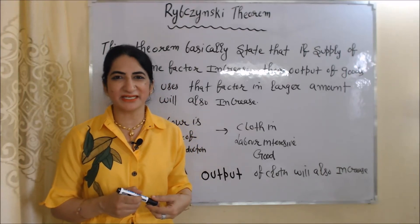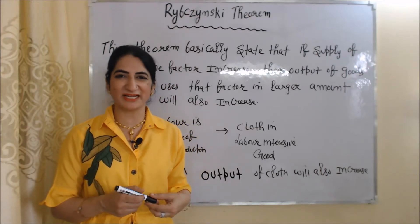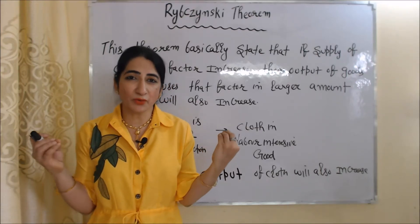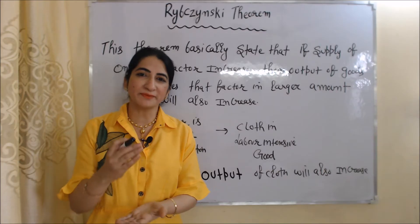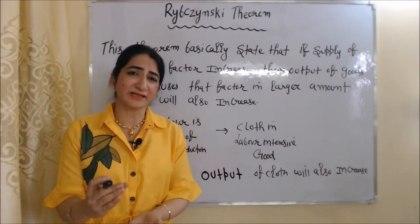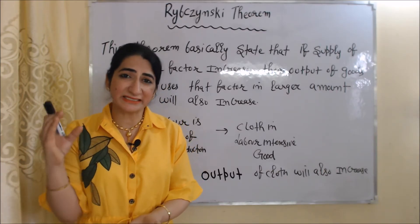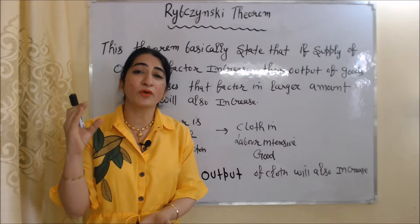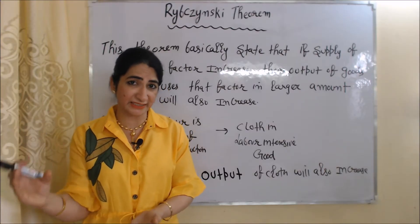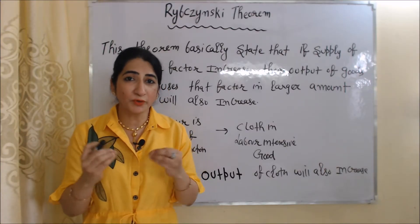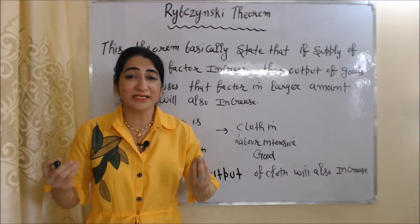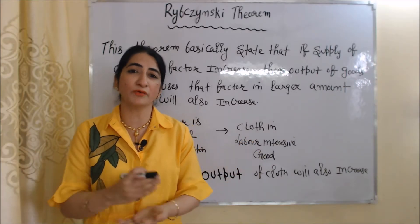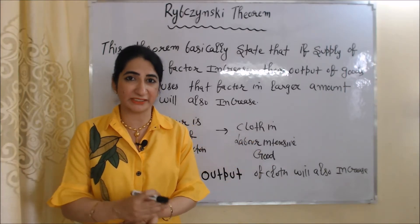Hello everyone, my name is Mini Seti. I hope you all are staying healthy. Today we are going to talk about the Rybczynski theorem. This theorem basically states that if supply of only one factor increases, then output of goods that uses that factor in larger amount will also increase.